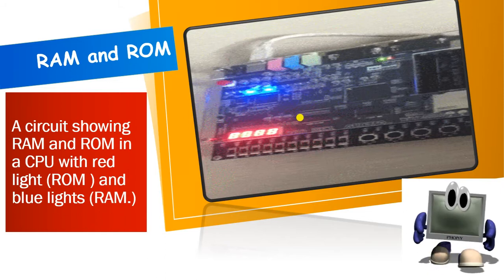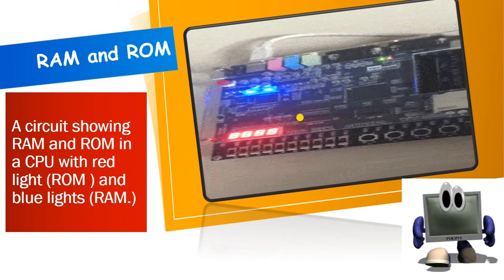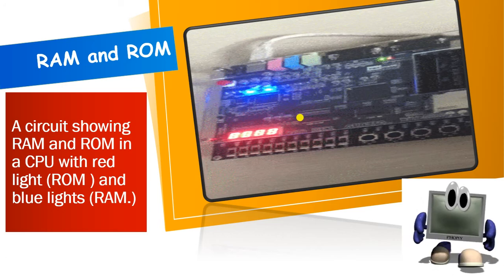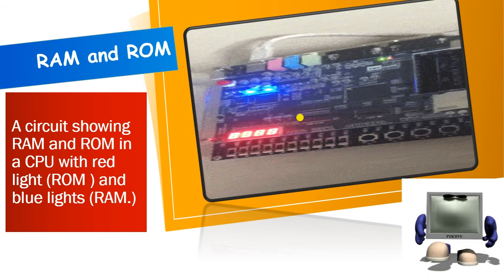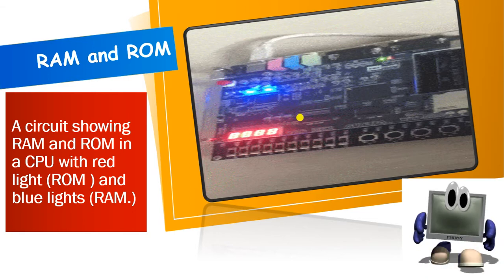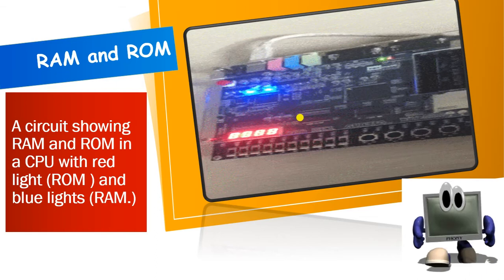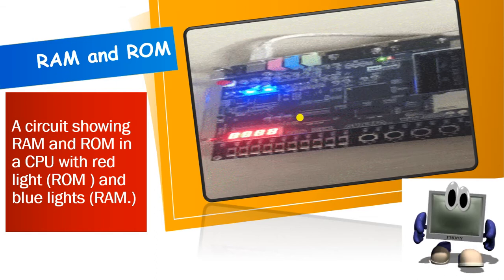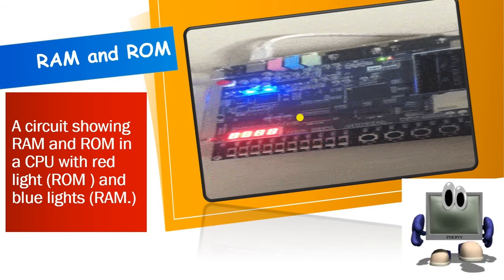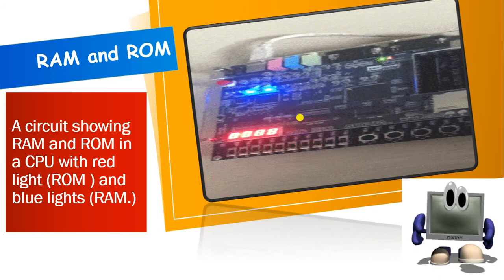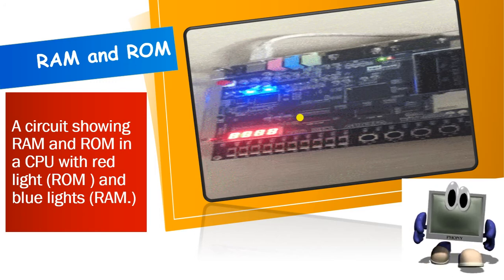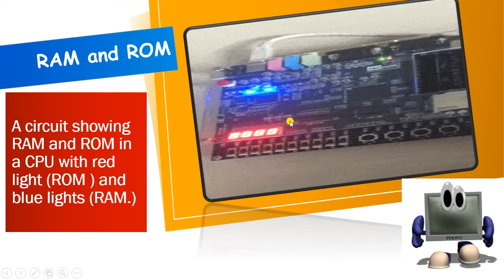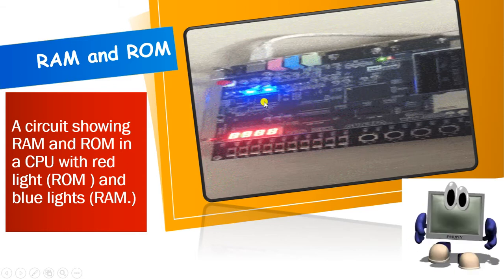You can see a circuit showing RAM and ROM in a CPU. The red lights indicate ROM memory and the blue lights indicate RAM memory.